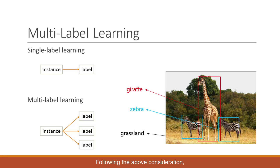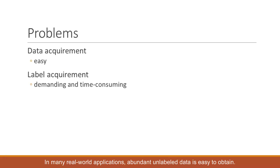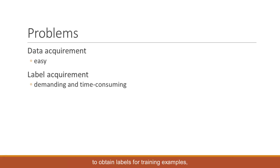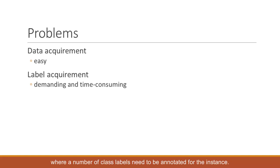Following the above consideration, the paradigm of multi-label learning naturally emerges. In many real-world applications, abundant unlabeled data is easy to obtain. Nonetheless, it is generally demanding and time-consuming to obtain labels for training examples, especially for multi-label learning tasks where a number of class labels need to be annotated for the instance.